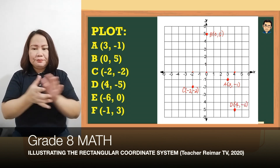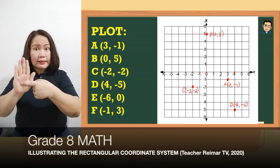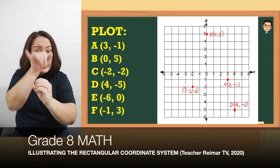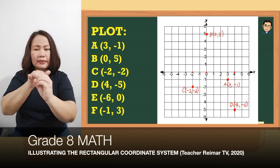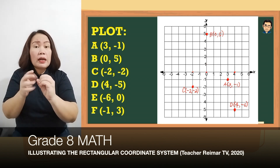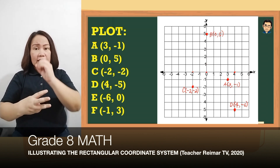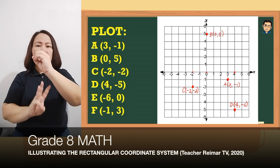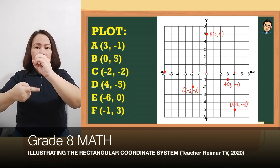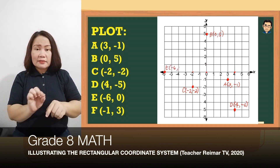Next, letter E naman, (-6, 0). Meron naman pong 0 sa isa sa mga coordinates natin, ibig sabihin nasa coordinate axis — maaring y-axis o kaya x-axis. So negative 6, 0 — ito po yung negative 6, itapat natin sa 0. So nandito po yung (-6, 0). Pangalanan natin siya as E (-6, 0).